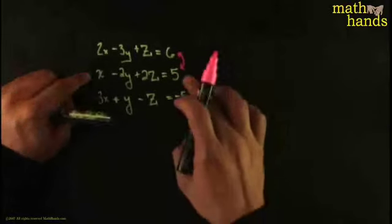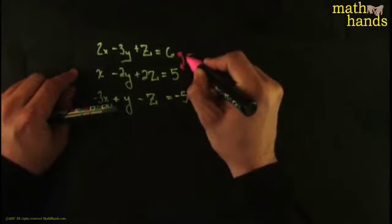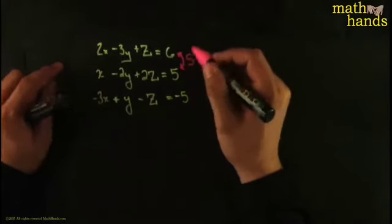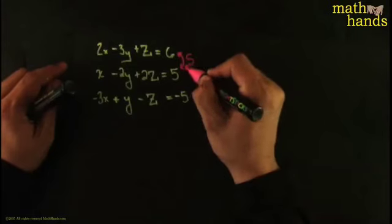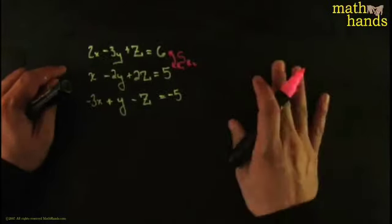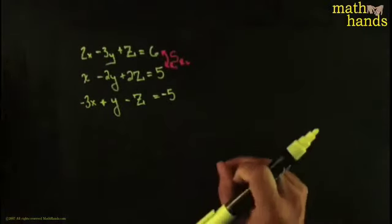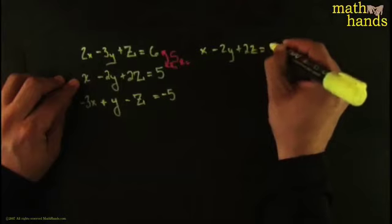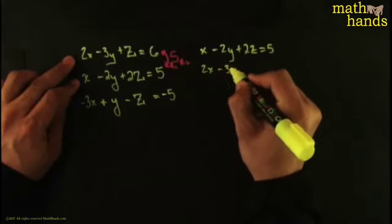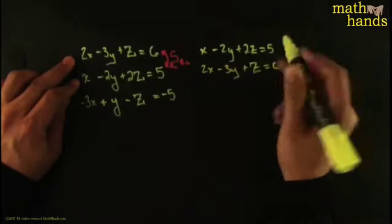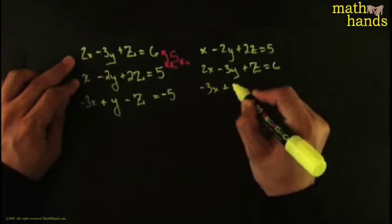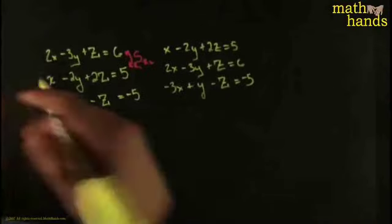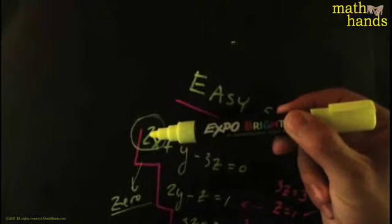One thing I can do is switch two rows — I can't imagine that switching them would change the solution. All you're doing is writing this equation above that one and vice versa. This is called switching, and I'll use 'S' as a symbol for it. So I'm switching row 1 and row 2. The new system becomes: x - 2y + 2z = 5, then 2x - 3y + z = 6, then -3x + y - z = -5. Now I have a 1 on that spot.